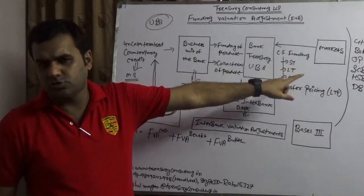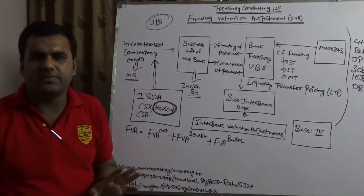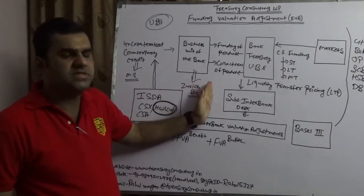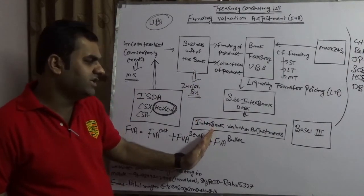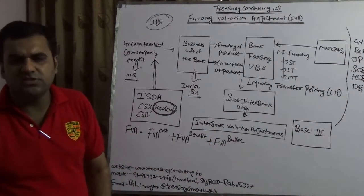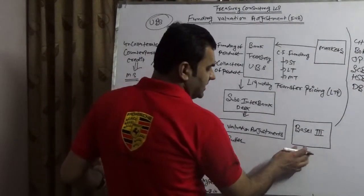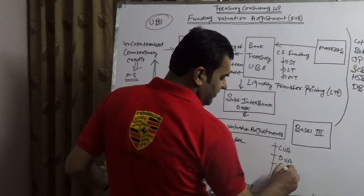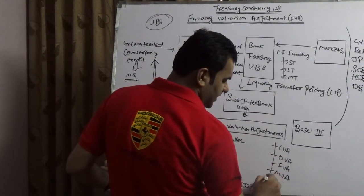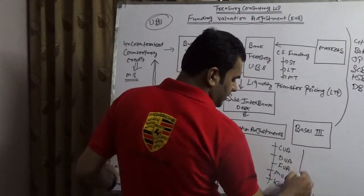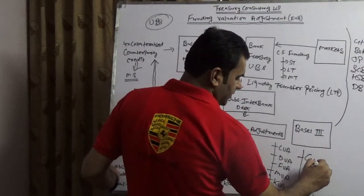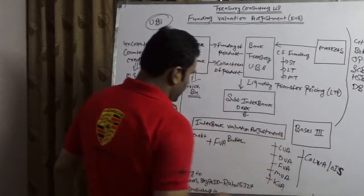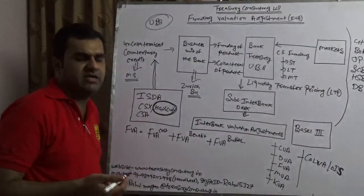Either they go to the interbank market — which is most common, as banks generally go to the interbank market to raise money — or they can go to their subsidiary interbank. These subsidiary interbanks would always have their interbank valuation adjustments. These valuation adjustments are complied with respect to Basel 3: CVA, DVA, FVA (which we are discussing), Marginal Value Adjustment, Capital Valuation Adjustment, ColVA, OIS (Overnight Index Swaps), and respective others. This is how the Funding Valuation Adjustment works.